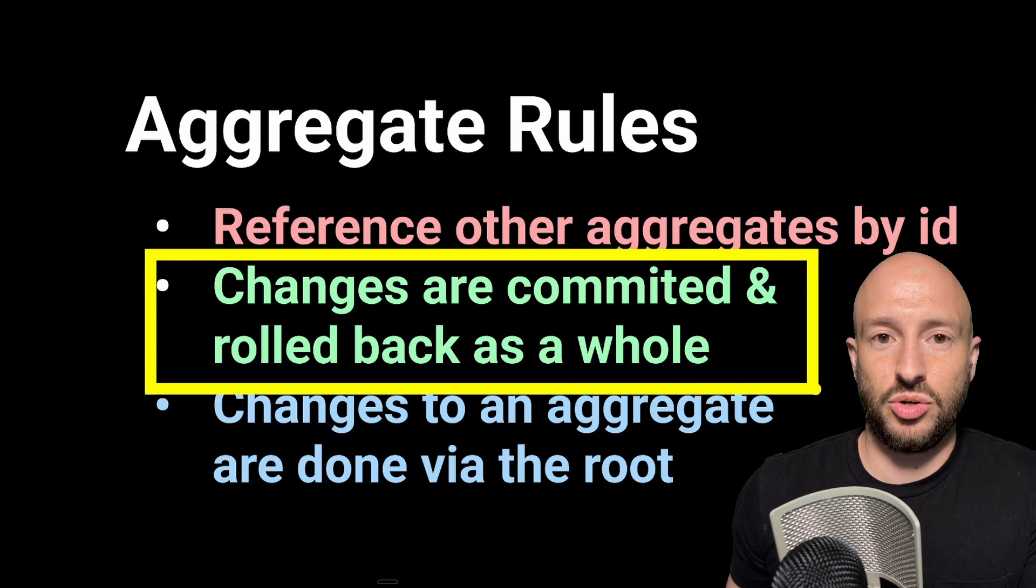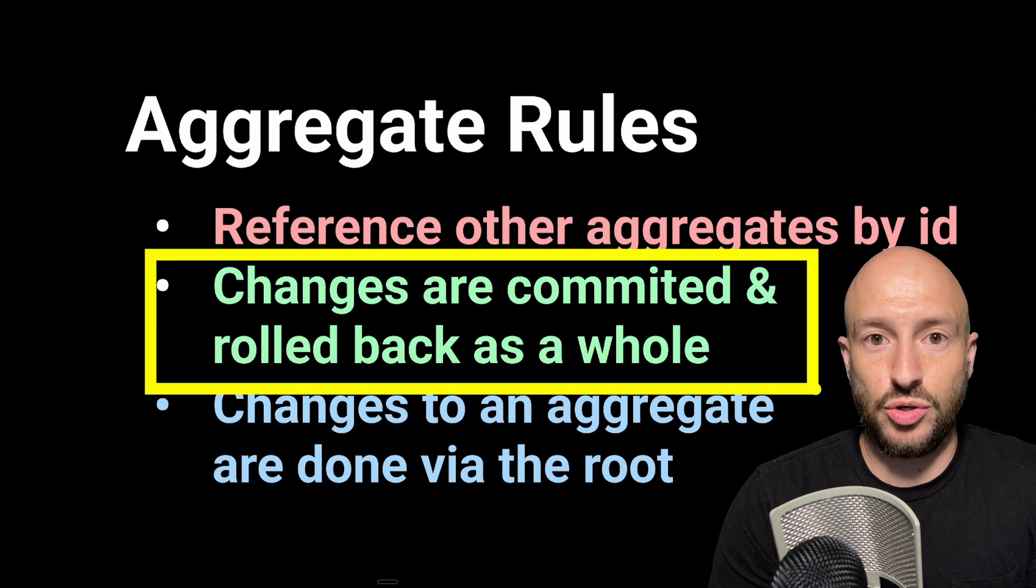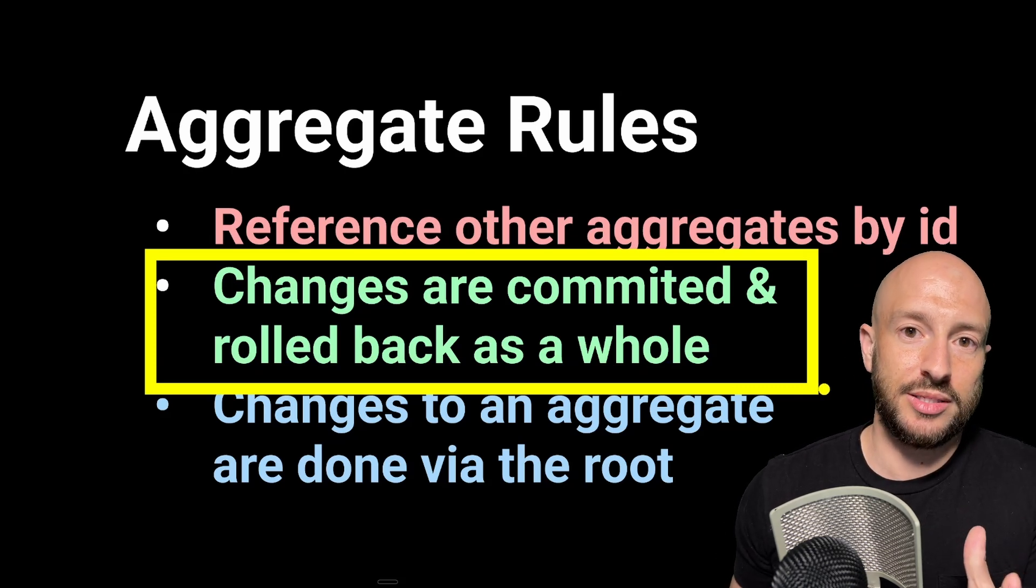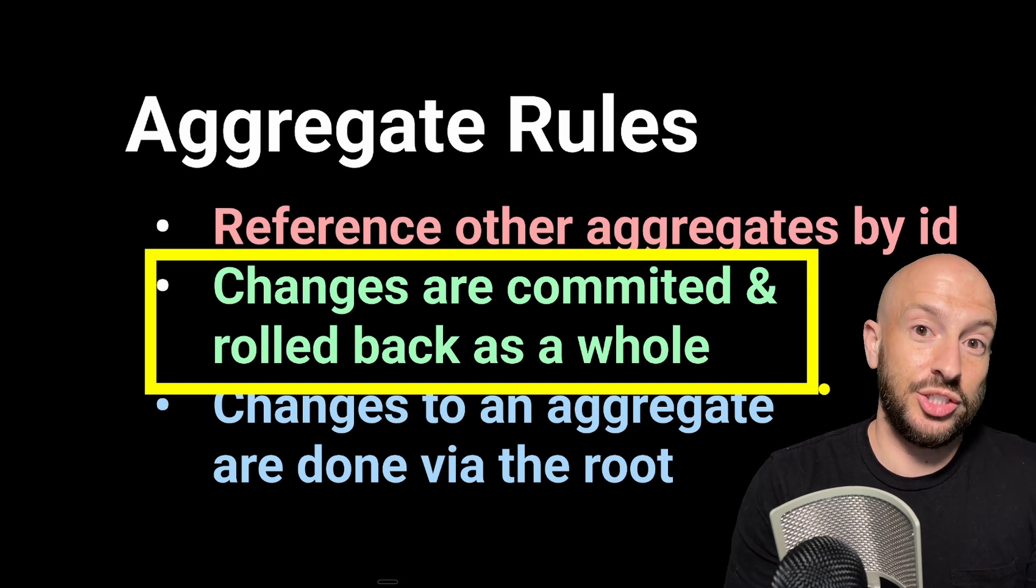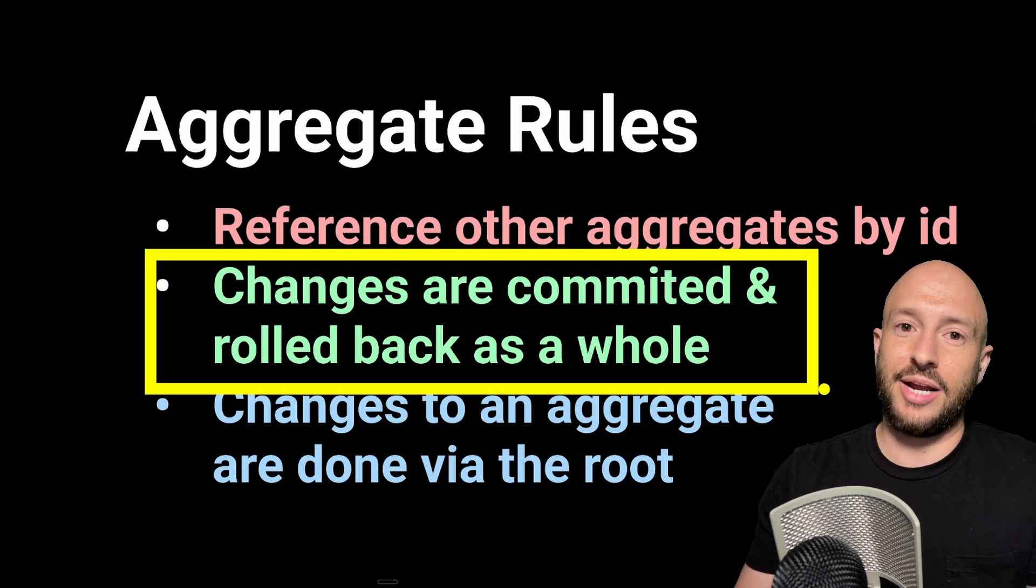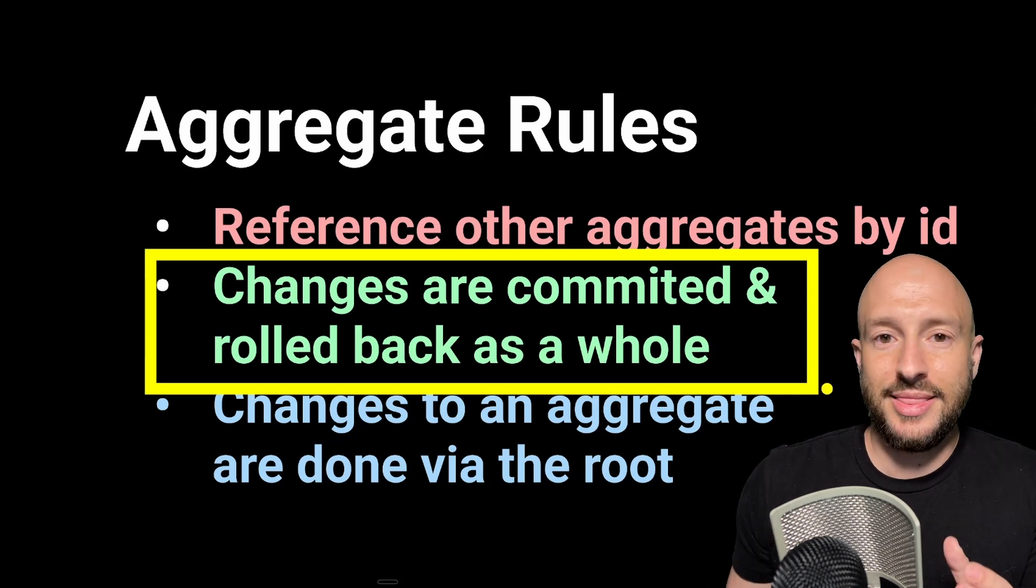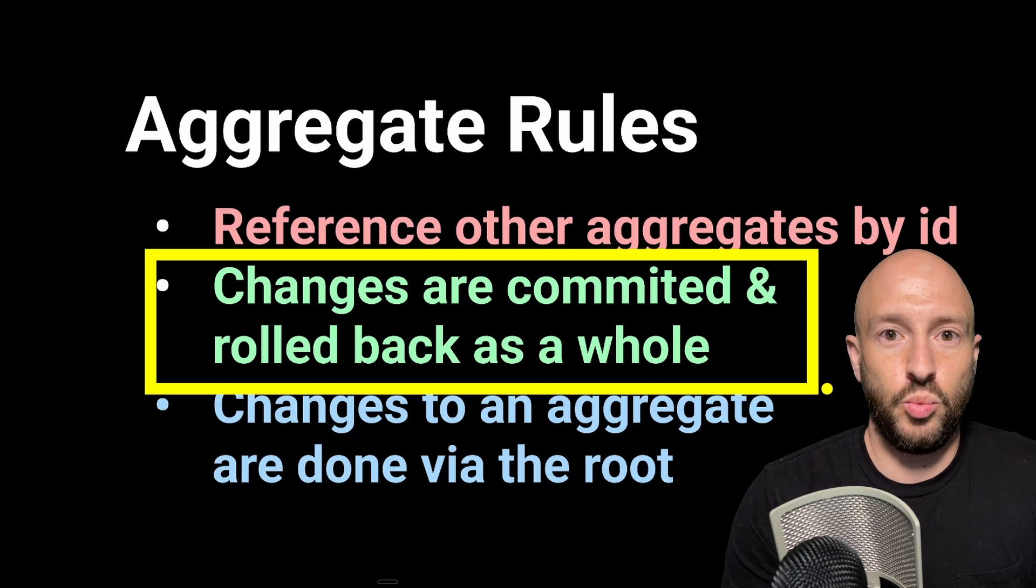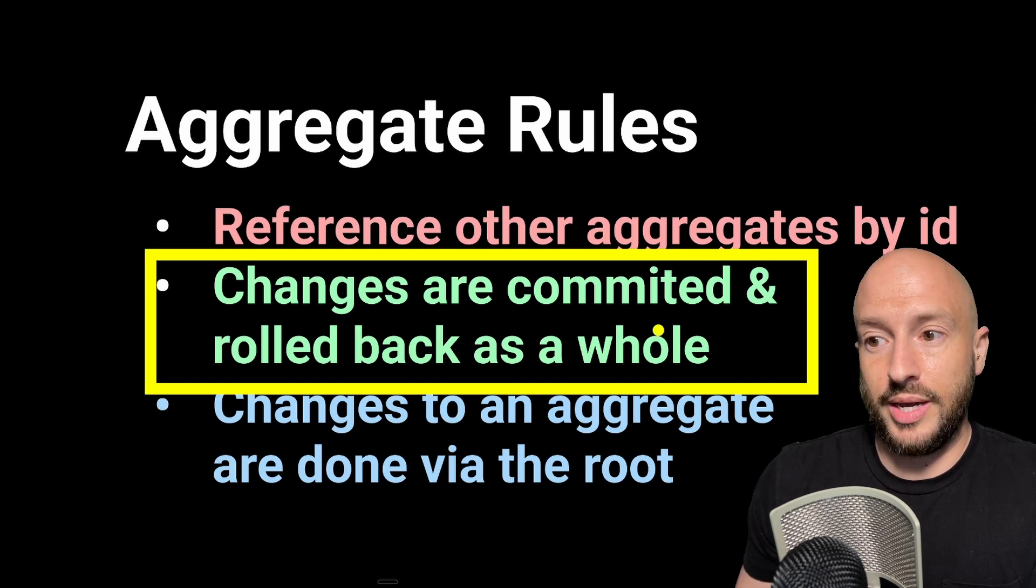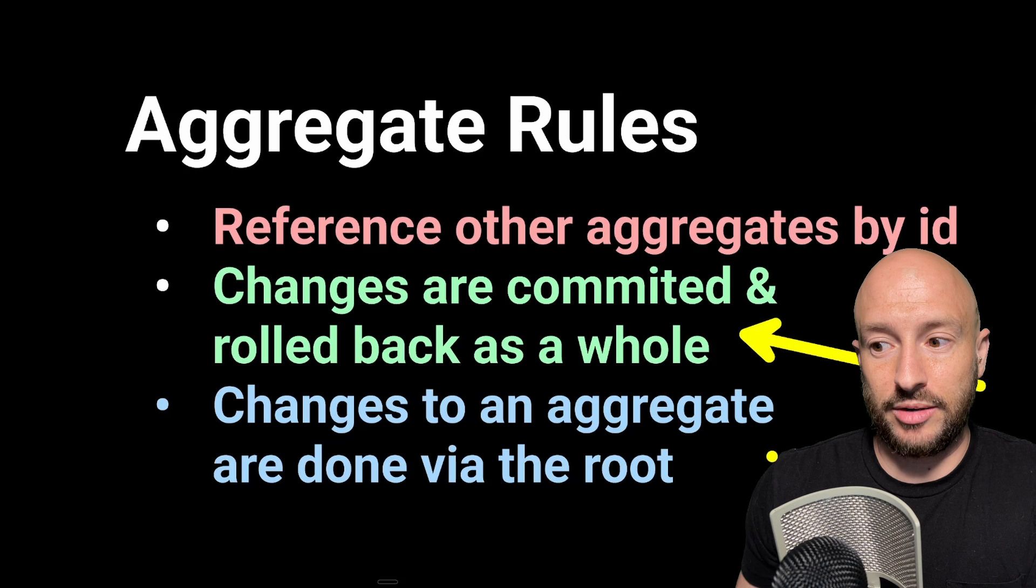The next one is a fundamental rule of the aggregate. It's that the aggregate is a transactional boundary, which means that changes to the aggregate are committed and rolled back as a whole. So any changes you do to the aggregate, you basically pull the entire aggregate from the database, do whatever changes, and then you write it back to the database. That's why we prefer having smaller aggregates rather than bigger aggregates. We don't want to have to read and write a lot of data every time we want to make a change. So this is very important and this is something to keep in mind when you're designing your aggregates.